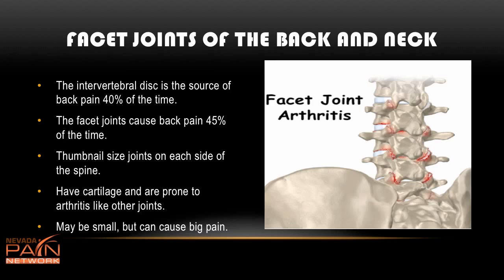When you look at the back, up and down bilaterally — meaning left and right — there are facet joints. They are cartilaginous, about the size of a thumbnail, and they allow significant mobility in the back and the neck. The facet joints cause 45% of back pain, and even though they're very small, they can cause very significant pain.